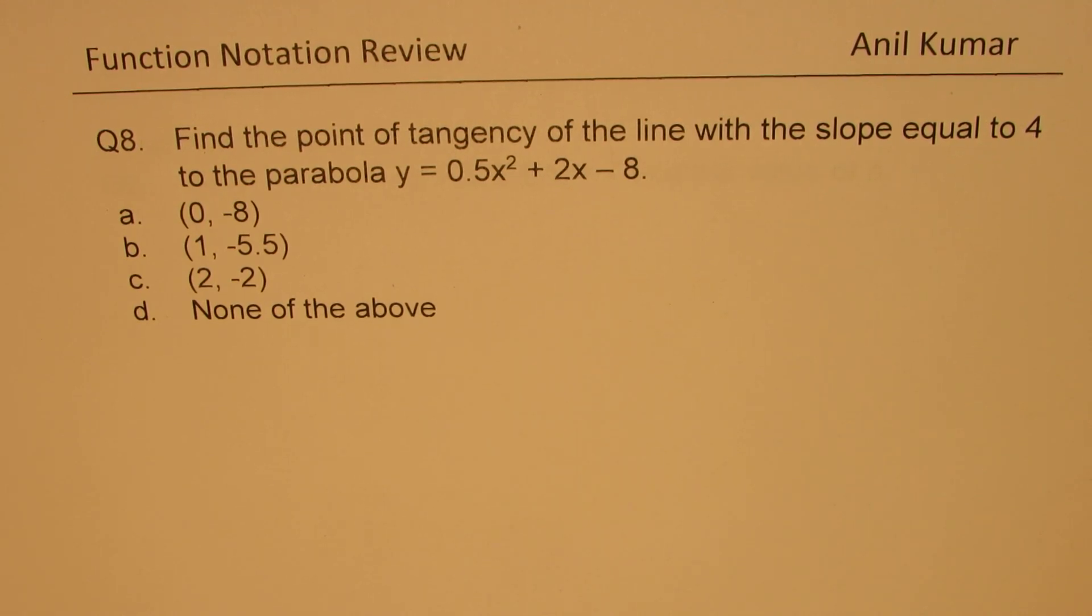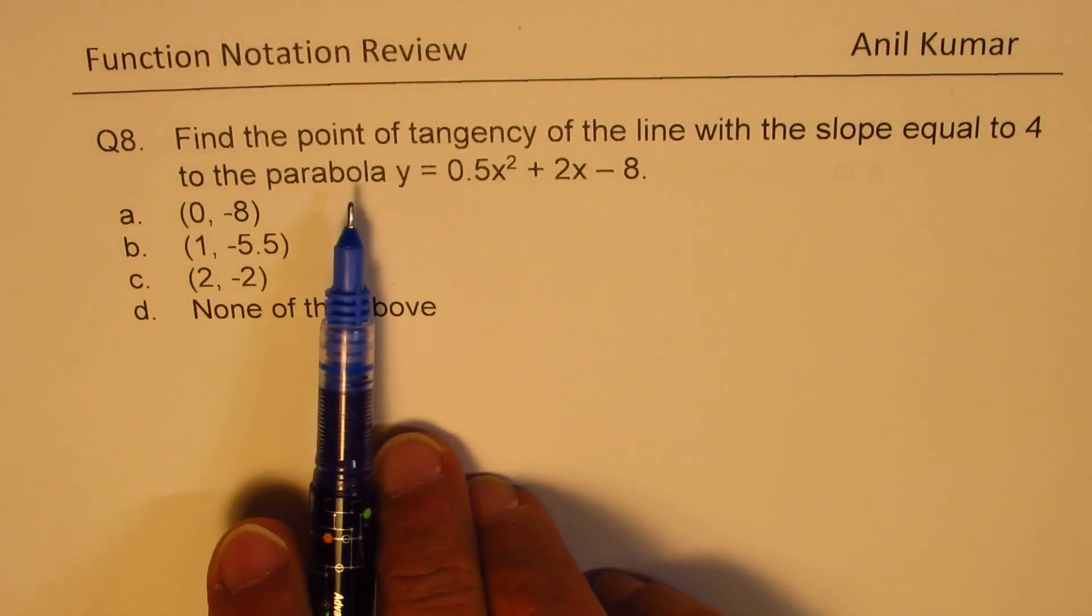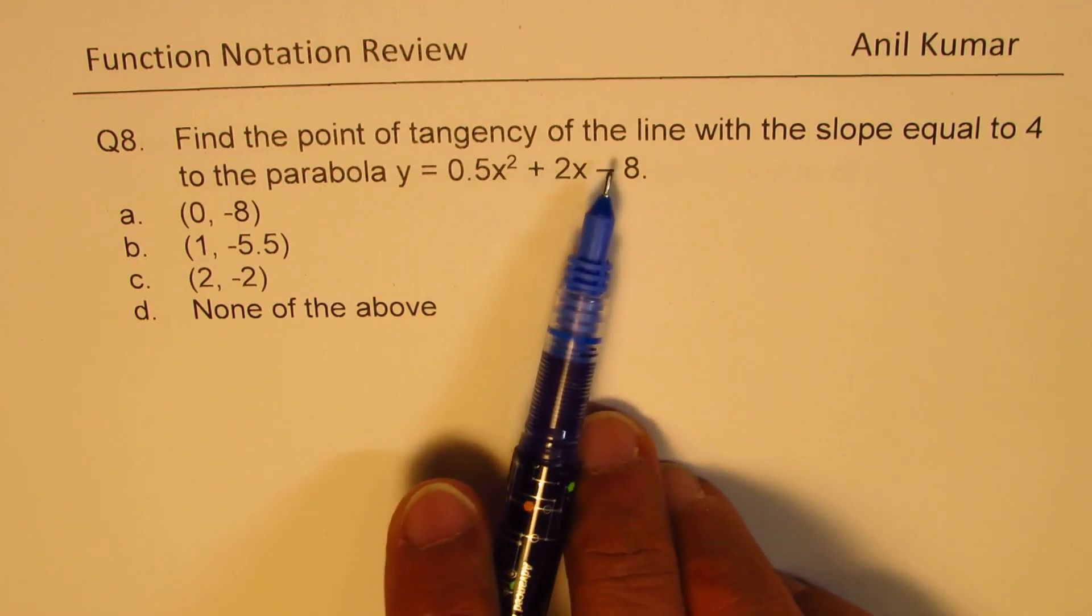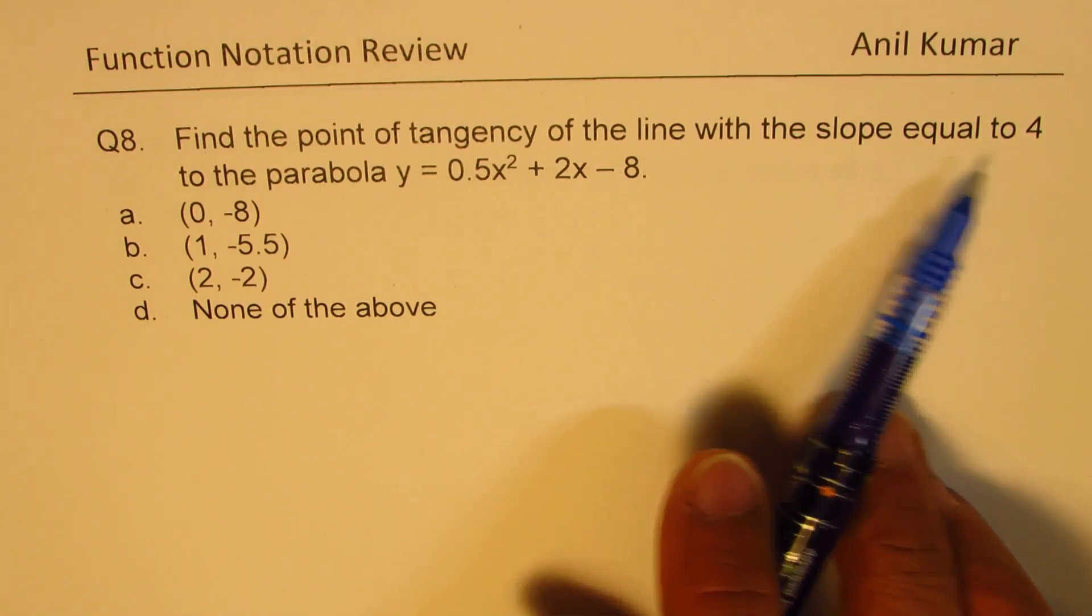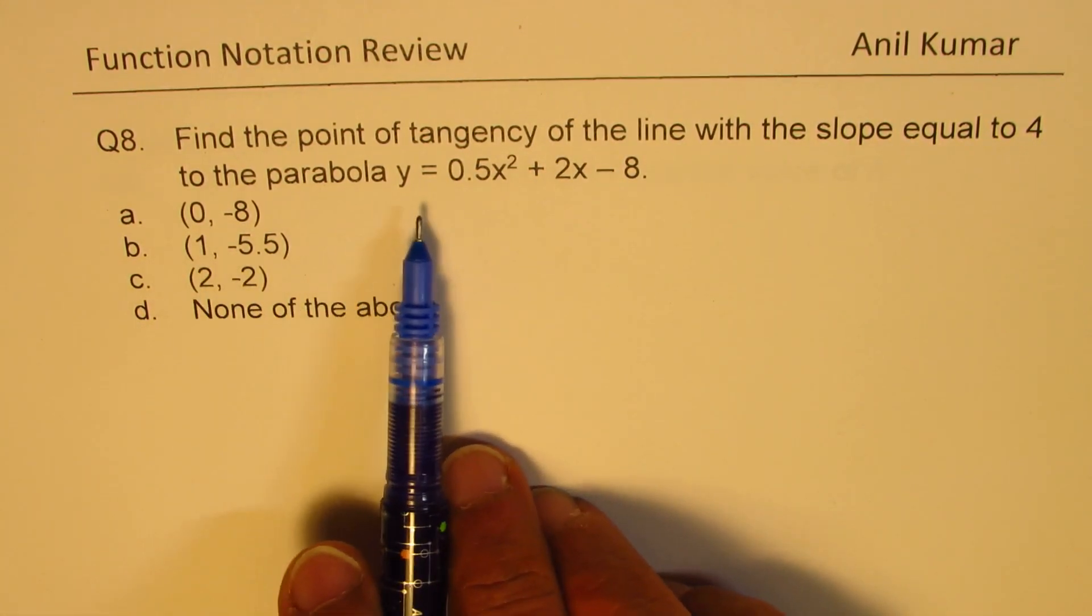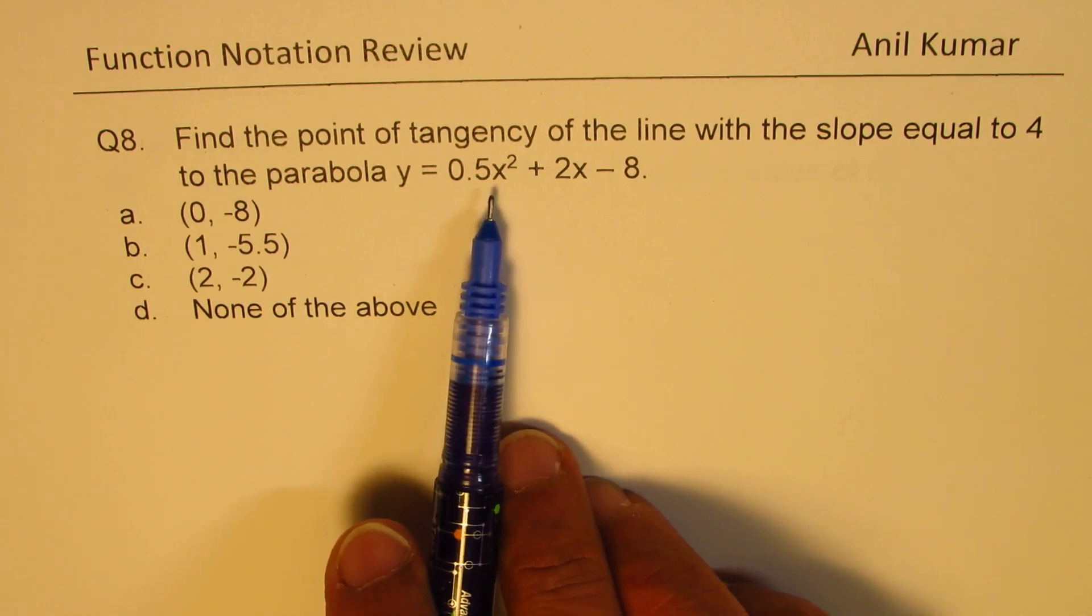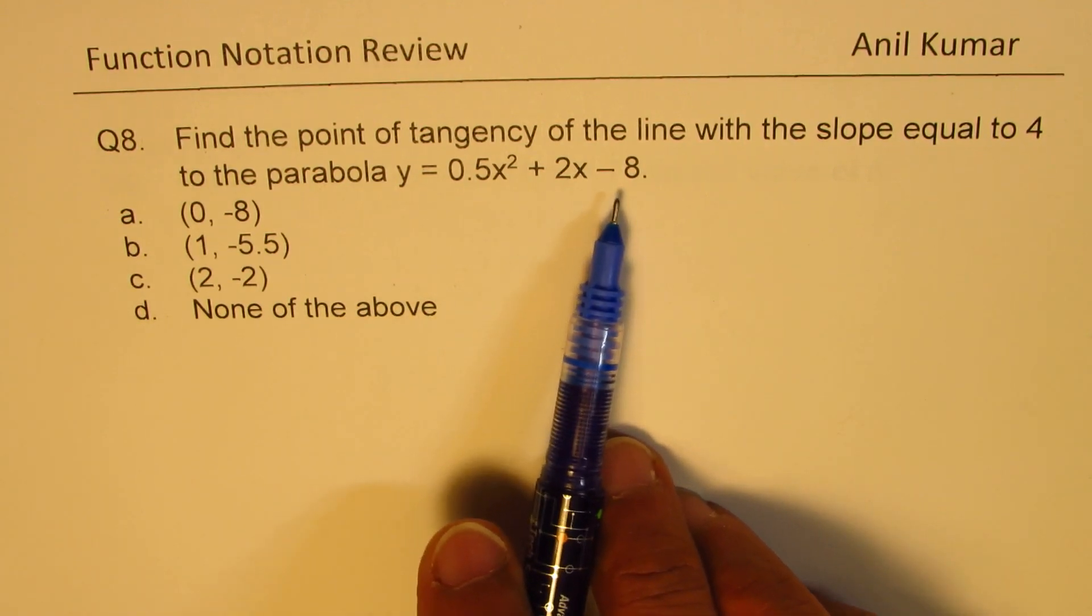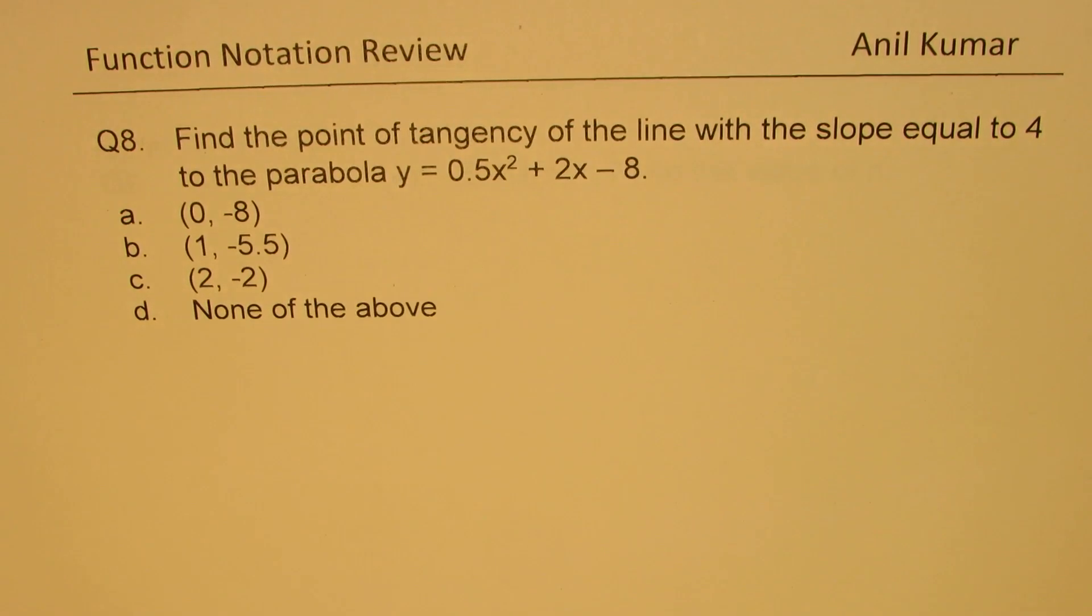The question here is: find the point of tangency of the line with the slope equal to 4 to the parabola y = 0.5x² + 2x - 8. Now three points are given to you to test it out. You can always pause the video, answer this question, and then look into my suggestions.